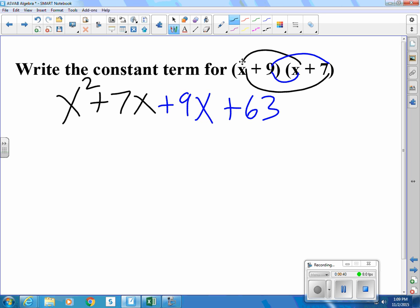We'll combine like terms. We have two terms with an x in them. 9 plus 7 is 16.